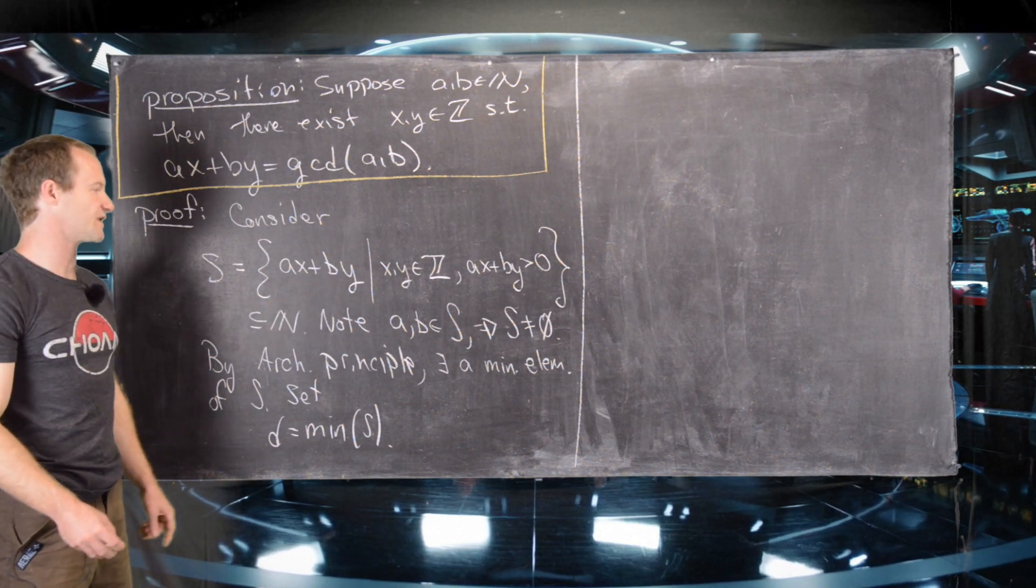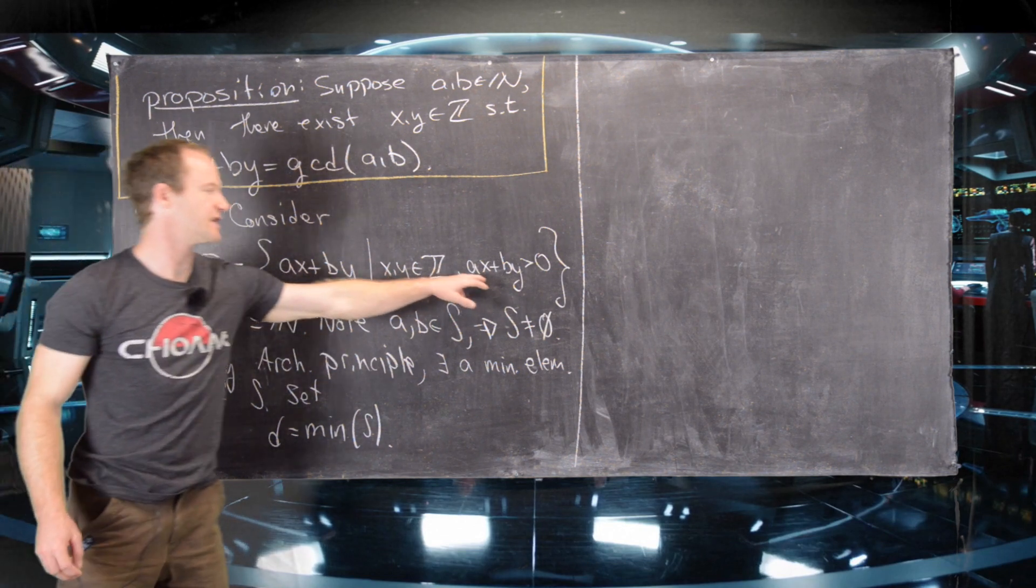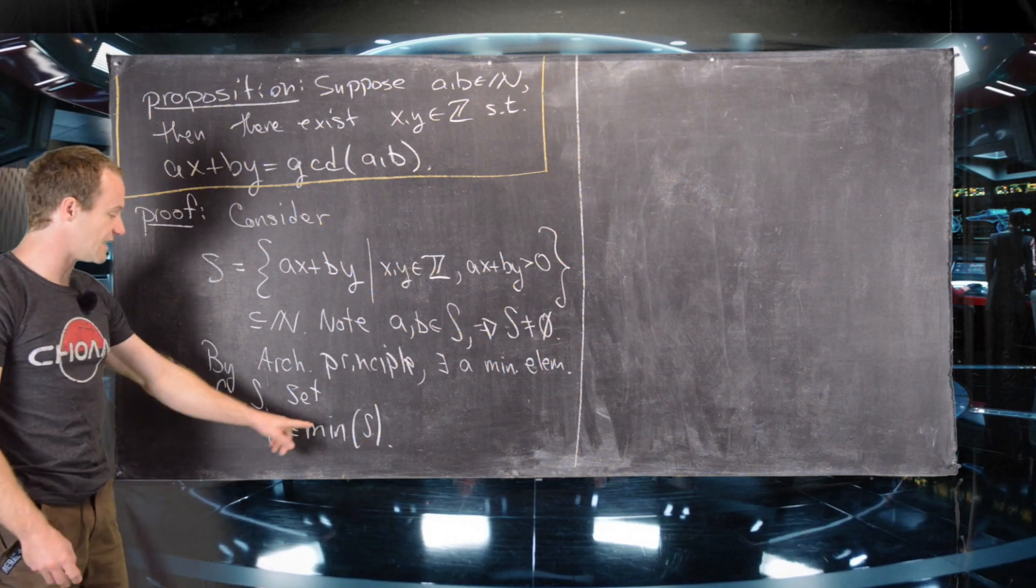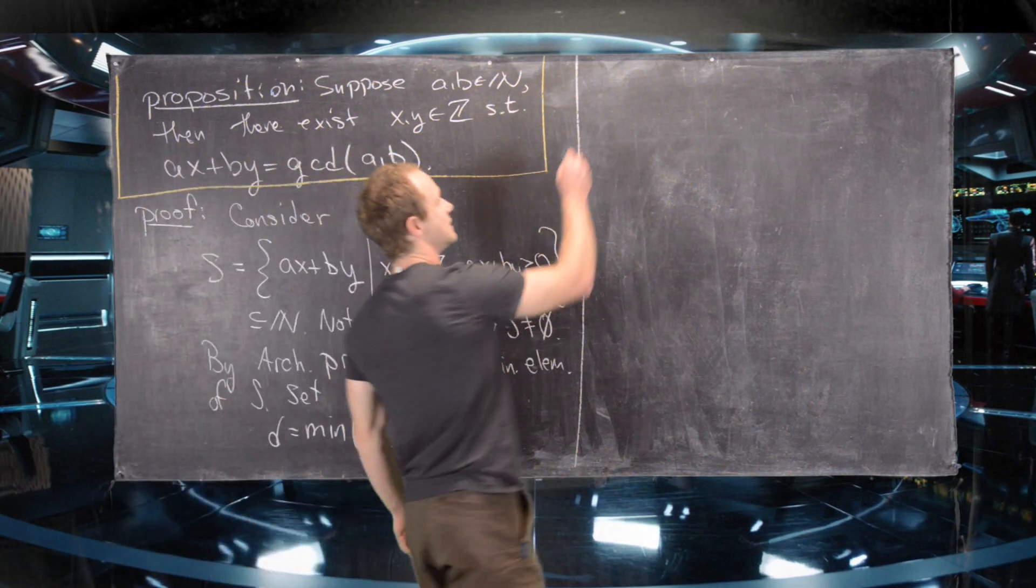Which is the set of all integer linear combinations of AX plus BY, under the condition that AX plus BY is positive. And then we set D equal to the minimal element of that set.